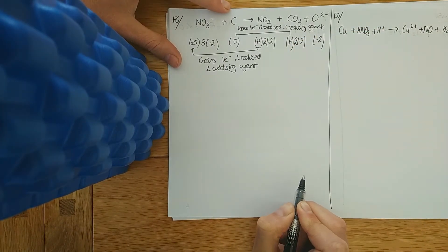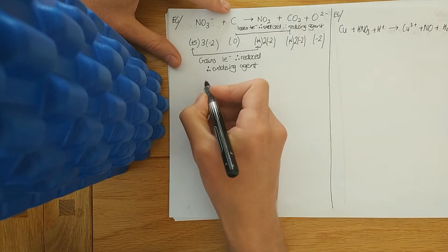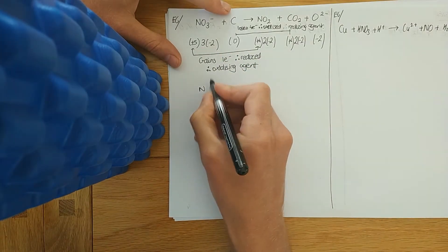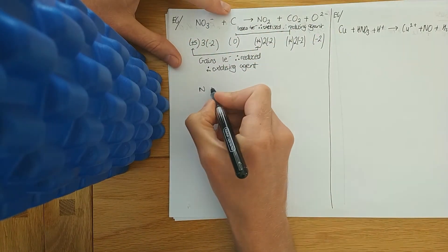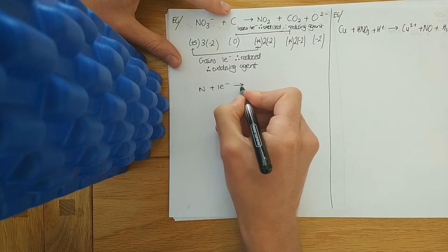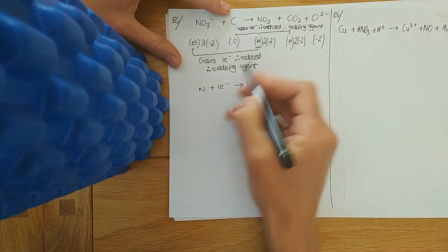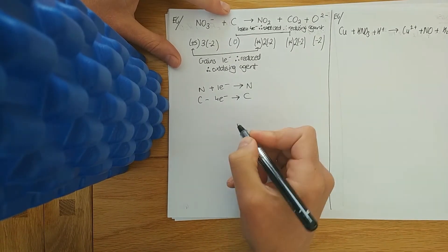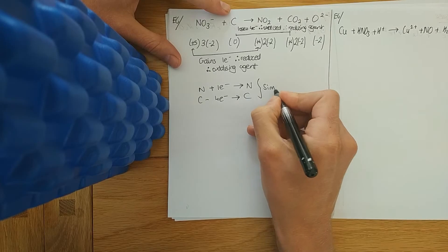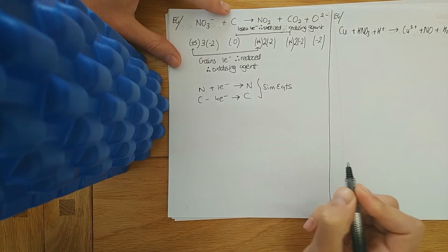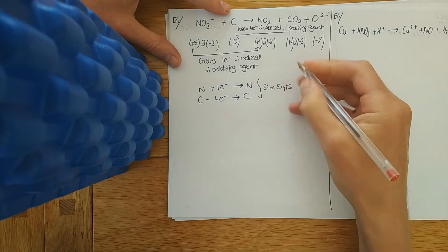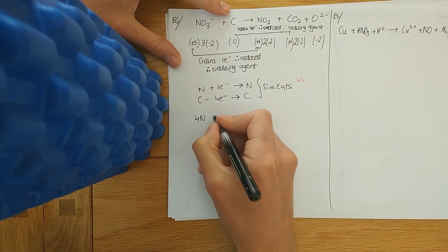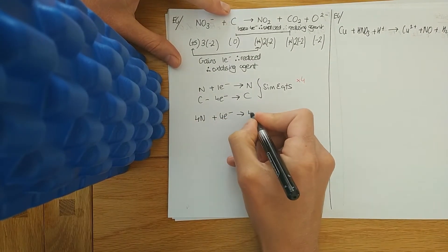Convert to maths: nitrogen gained one electron, so N + 1e⁻ → N. Carbon lost four electrons, so C − 4e⁻ → C. For simultaneous equations with the same number of electrons and different signs, multiply the top nitrogen equation by four: 4N + 4e⁻ → 4N.